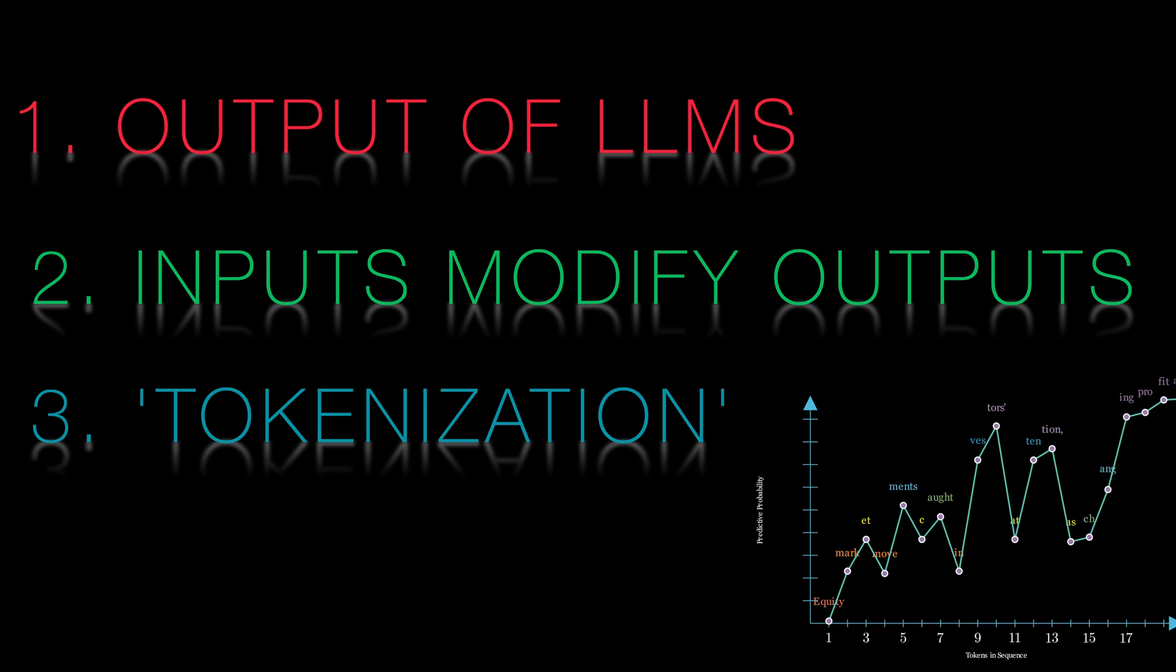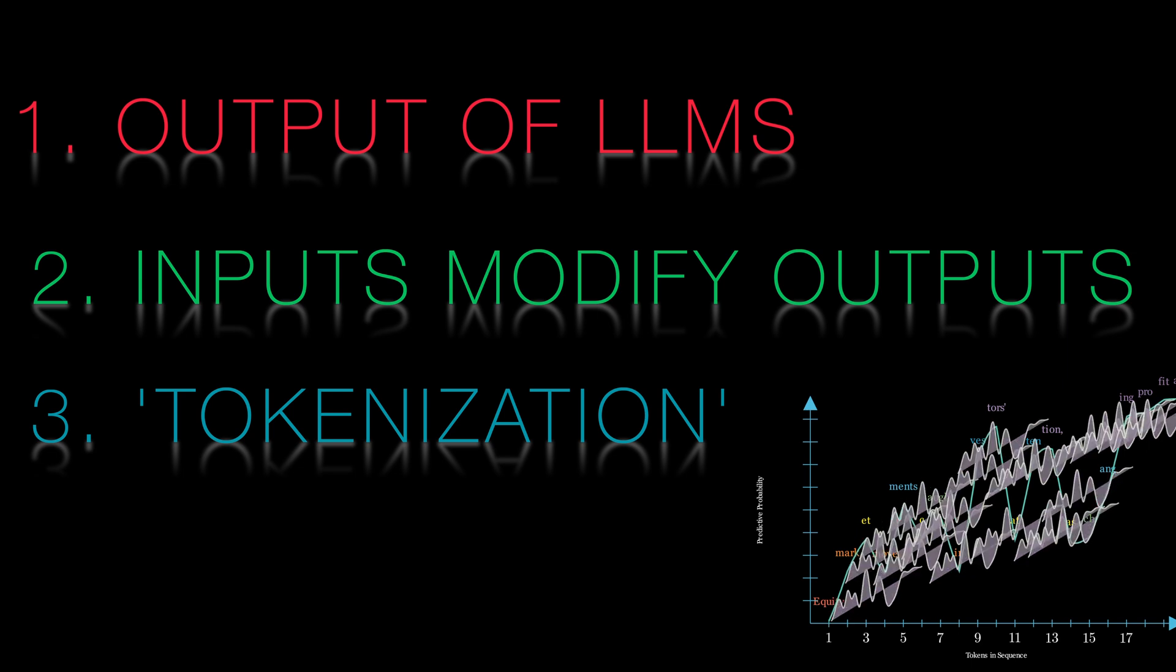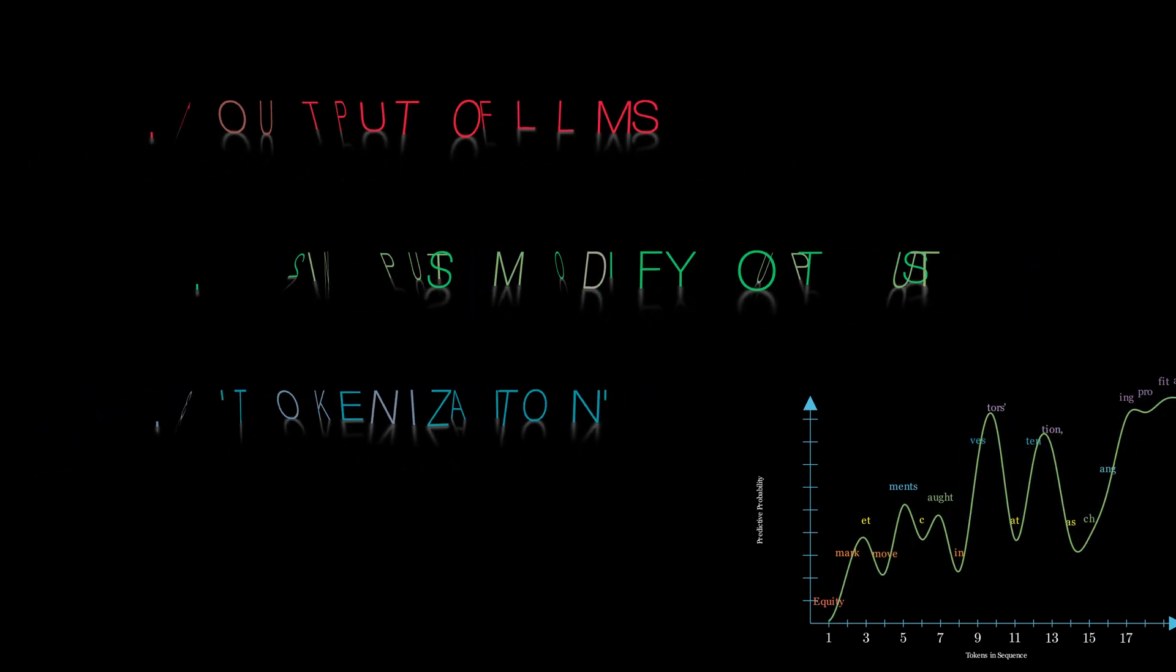Now, let's delve into our first step, understanding the core mechanism behind AI models like ChatGPT, Claude and Gemini. What do these models actually produce when they process language? The answer lies in probability distributions. Consider this sentence.